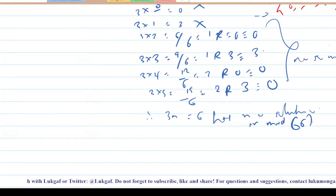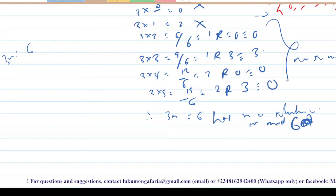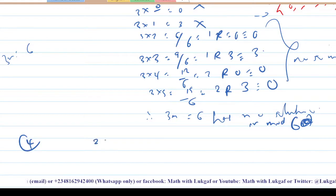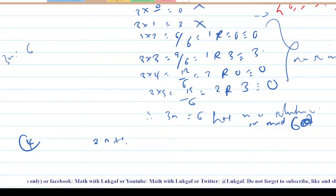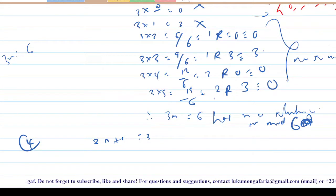If you try to solve this as a simple linear equation you would get n equals 2/3, but in modular arithmetic it has no solution. Lastly, let's say we have 2n plus 1 congruent to 3 in modulo 4.